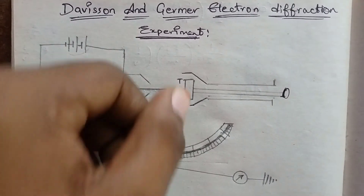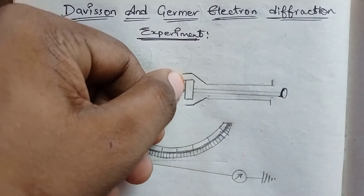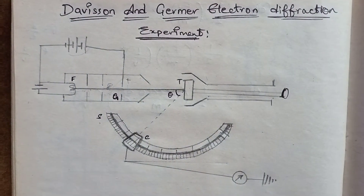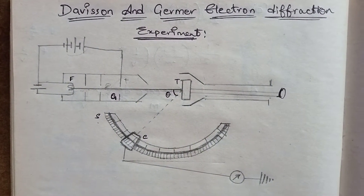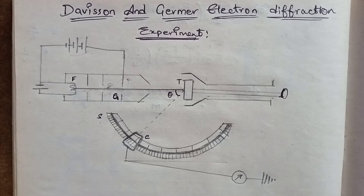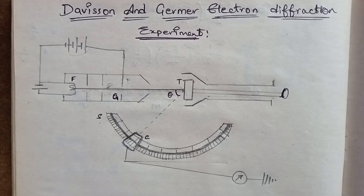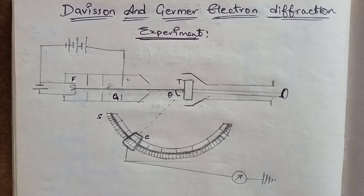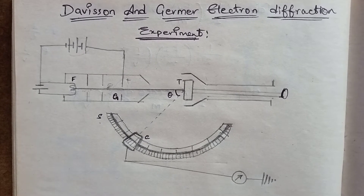When the nickel target was exposed to oxygen, it would oxidize. So to remove the oxide layer, the target was heated in an oven to remove the oxygen and restore it to its pure metallic form.